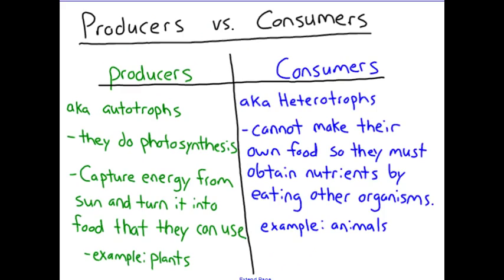Before I can begin to describe what trophic levels are, I need you to understand that there are two different groups of organisms in ecology, and we differentiate them by how they get their energy. The first group is called producers, also known as autotrophs. These are organisms that get their energy by doing photosynthesis — taking sunlight energy and converting it into food. So these are usually plants.